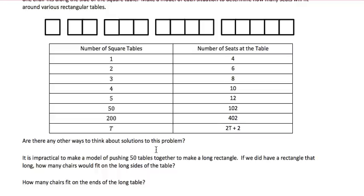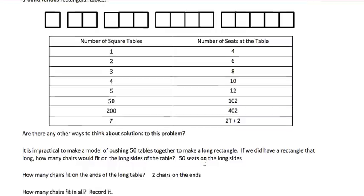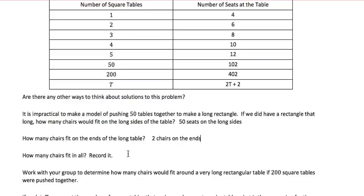Now, there may be other ways to think about solutions to this problem, but it's impractical to make a model of pushing 50 tables together to make a long rectangle. If we did have a rectangle that long, how many chairs would fit on the long sides of the tables? Well, we've determined that that would be 50, 50 seats on the long sides. The chairs on the ends of the long table would be 2 chairs on the ends.